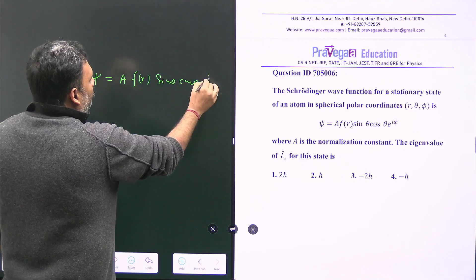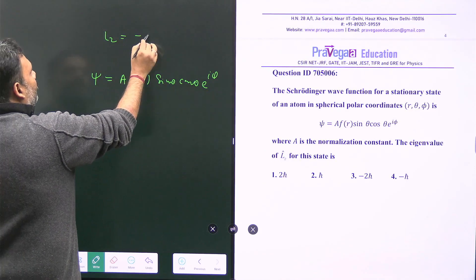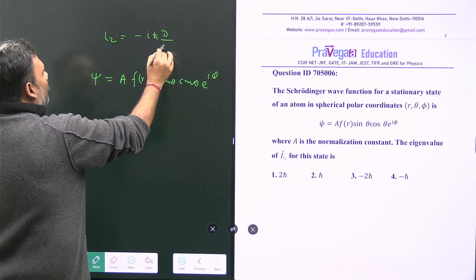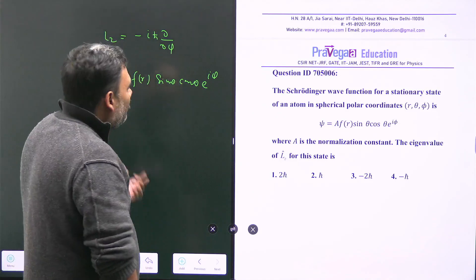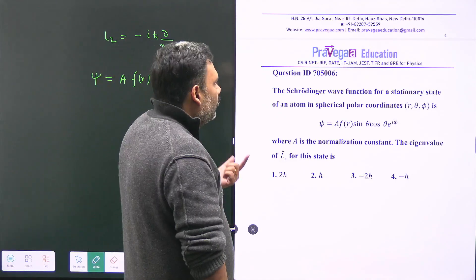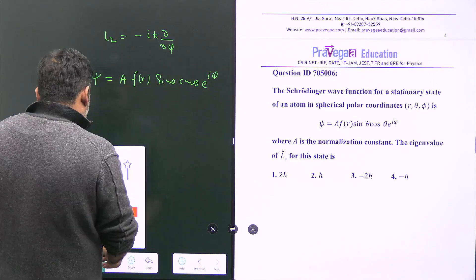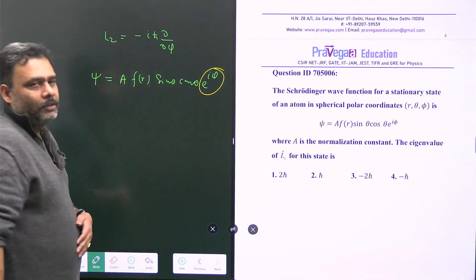We have to talk about Lz, which is nothing but -iℏ ∂/∂φ. So when you're analyzing Lz, you have to just look at the term e^(iφ).